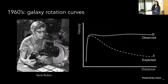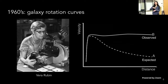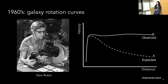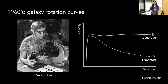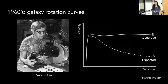In the 1960s, Vera Rubin looked at galaxy rotation of spiral galaxies — how stars are moving around in a spiral galaxy. She measured the velocity of these stars moving around in the spiral galaxies pretty conclusively. The x-axis is the distance away from the center of the galaxy, and the y-axis is the velocity. What she expected to see is this dashed curve, where as you go further away from the center of the galaxy, things should slow down.